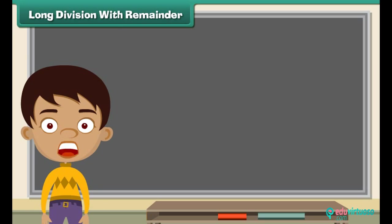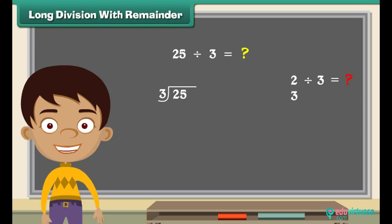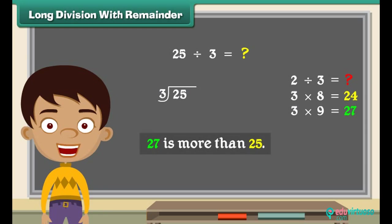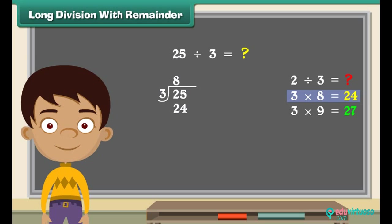Let's now solve another division question: divide twenty-five by three. The first number from the left in twenty-five is two. Can we divide two by three? Three cannot divide two, therefore we take both numbers from twenty-five. Now divide twenty-five by three. We know three multiplied by eight is twenty-four, and three multiplied by nine is twenty-seven. Twenty-seven is more than twenty-five, so we take three multiplied by eight which is twenty-four. Put eight right above twenty-five and put the answer below twenty-five. Subtract: twenty-five minus twenty-four is one. We see that three cannot divide one, so we get a remainder of one.